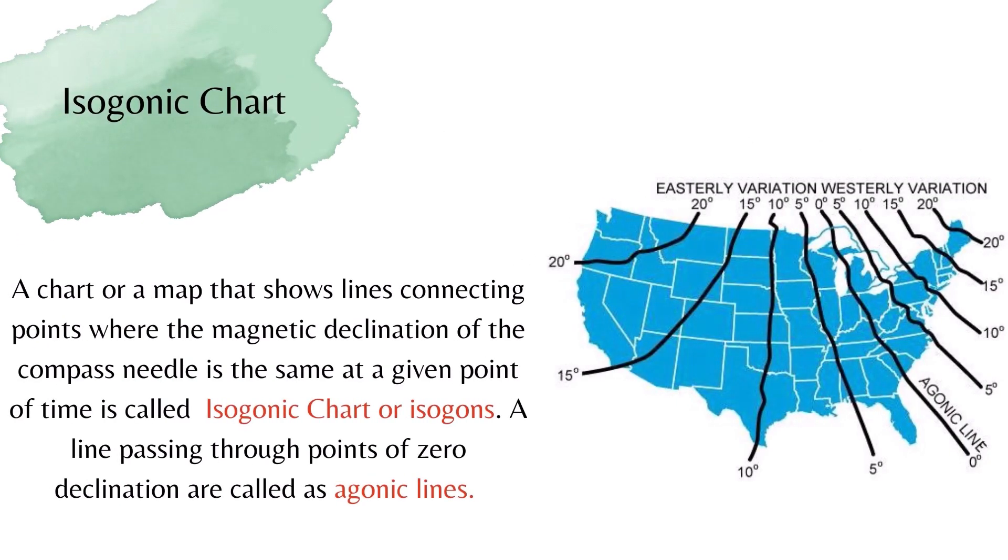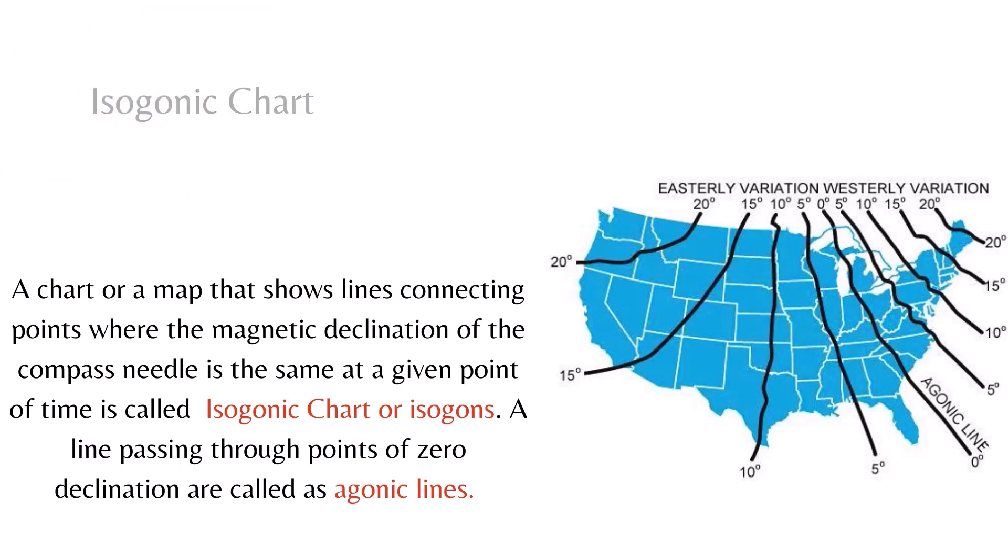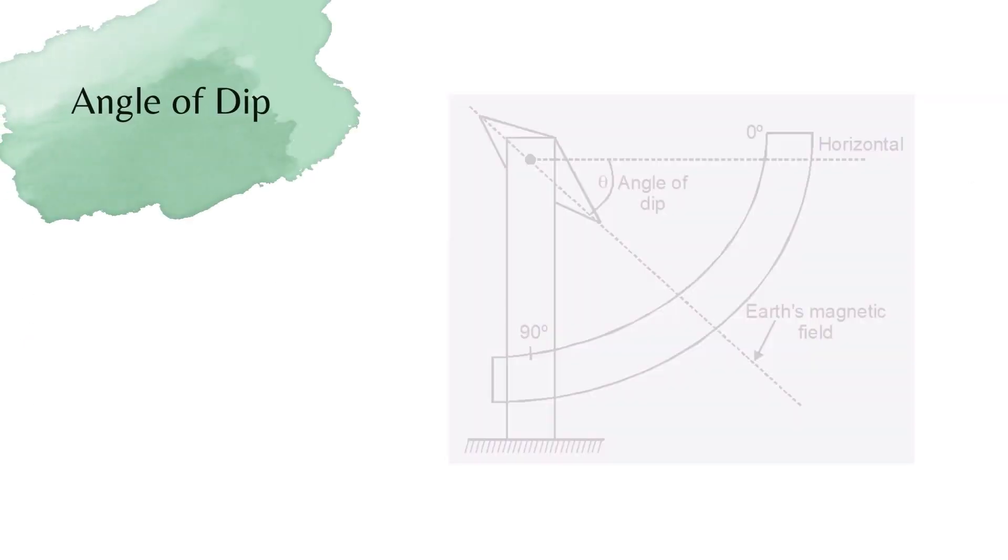Isogonic charts: A chart or map that shows lines connecting points where the magnetic declination of the compass needle is the same at a given point of time is called an isogonic chart or isogons. A line passing through points of zero declination are called agonic lines. The chart helps to predict the magnetic declination at any place on a particular date.